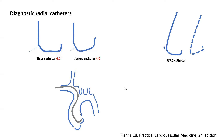The beauty of those catheters — Tiger and Jaki — is that they can also be used to engage the right coronary artery, the same way you would use a Jutkins right, which I will explain a little later.